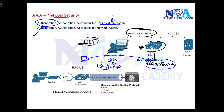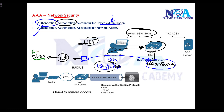Once this user logs into the device, he also needs to be authorized. In authorization, if this user belongs to the level one engineer, I want to make sure he should only be able to execute some basic show commands and maybe make some basic changes like changing the hostname or changing IP addresses. But he cannot make other changes like changes in routing configurations or shutting down interfaces. That's what authorization means.